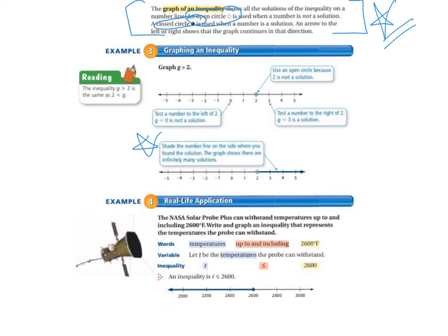Example 4, real-life application. The NASA Solar Probe Plus can withstand temperatures up to and including 2,600 degrees Fahrenheit. Write and graph an inequality that represents the temperatures the probe can withstand. So our words to pay attention to are temperatures up to and including and 2,600 degrees Fahrenheit. So we're going to let T be the temperatures and less than or equal to, because that's what the probe can withstand is temperatures up to and including, so less than or equal to, and 2,600.